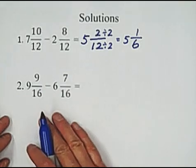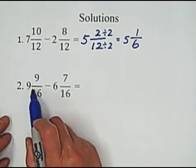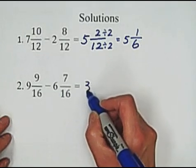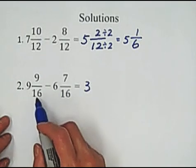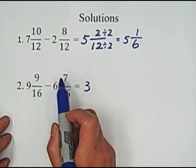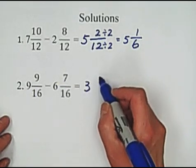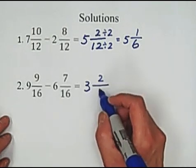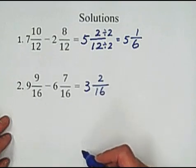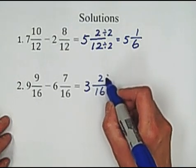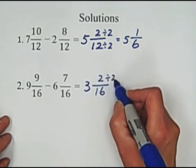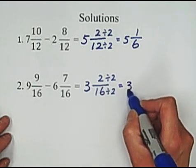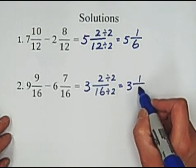Second. 9 minus 6, subtract, we got 3. Because of same denominator, subtract 7 from 9, which is 2. Keep the denominator unchanged, 16. So simplify. Divided by 2. Equals 3 and 1 over 8.